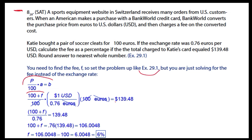And that equals 139.48. So there are some things we can cancel here — canceling units so that we have dollars on the left and the right. And then it just happens that we have 100 over 100 right there. So now it's just a matter of solving for F.